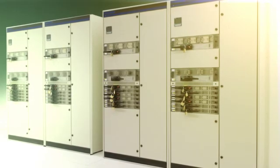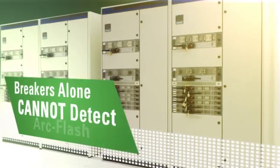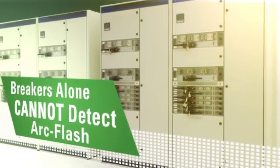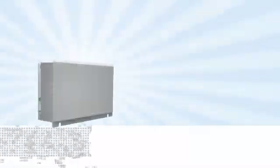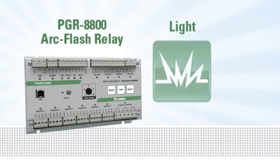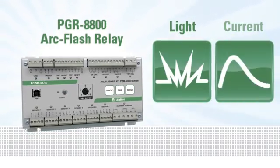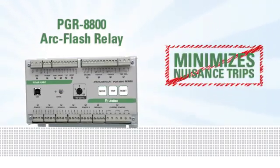Because the early stages of an arc flash draw a fraction of bolted fault current, circuit breakers alone cannot distinguish between the arcing current and a typical inrush current. The PGR-8800 solves this problem by detecting both light and current. It provides superior arc flash protection while minimizing nuisance trips.